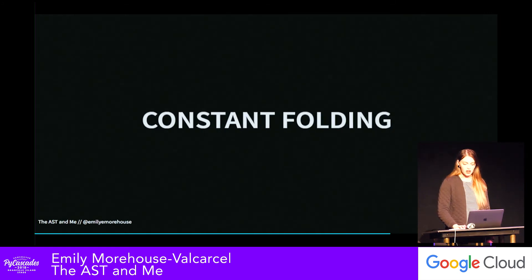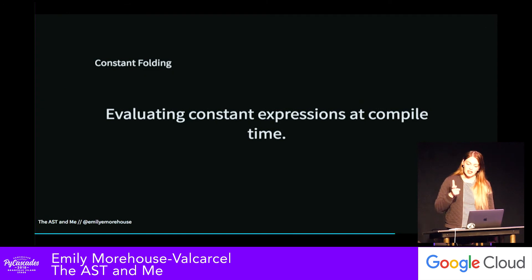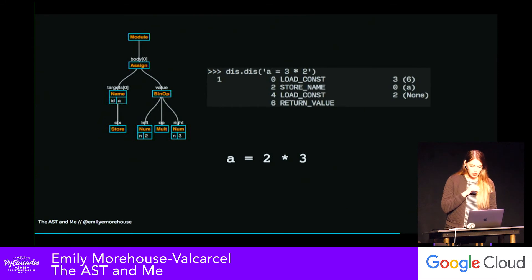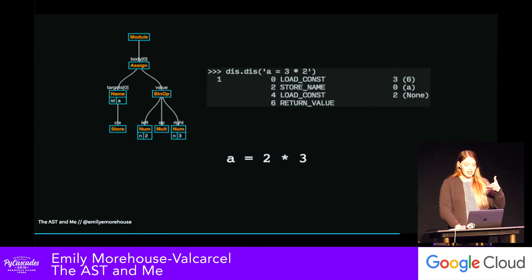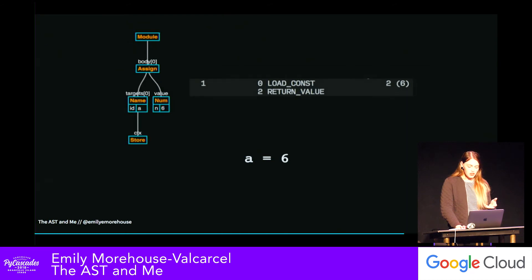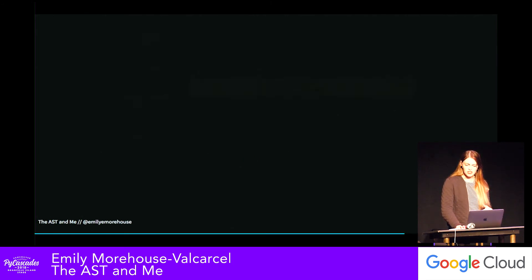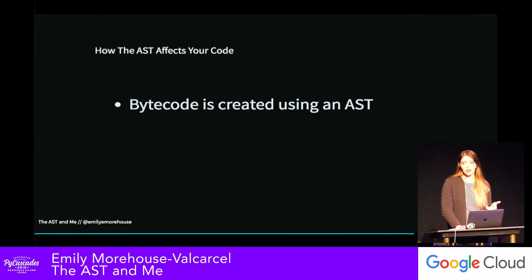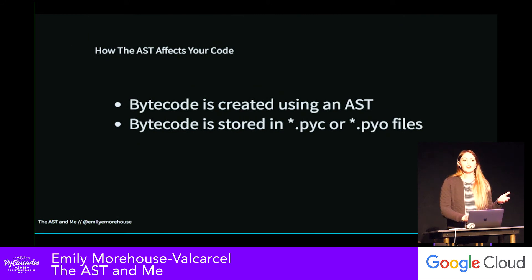The other example is constant folding — the process of recognizing and evaluating constant expressions at compile time rather than computing them at runtime every time. If we look at a piece of code, the AST is somewhat simple and the disassembled bytecode has about four operations. You won't see a huge speed-up in this example, but a few operations can be removed from the tree. If we can evaluate and say A equals six, we treat it as a constant instead of going through arithmetic operations. Bytecode is stored in .pyc or .pyo files, which in Python 3 are neatly organized into your __pycache__ folder.